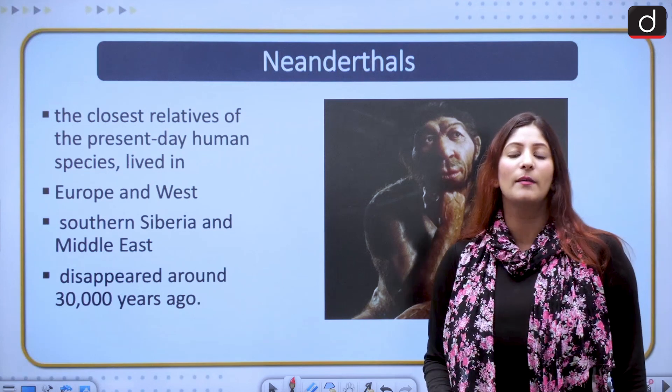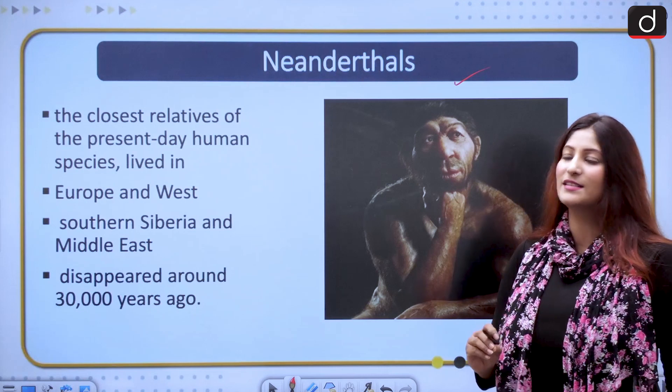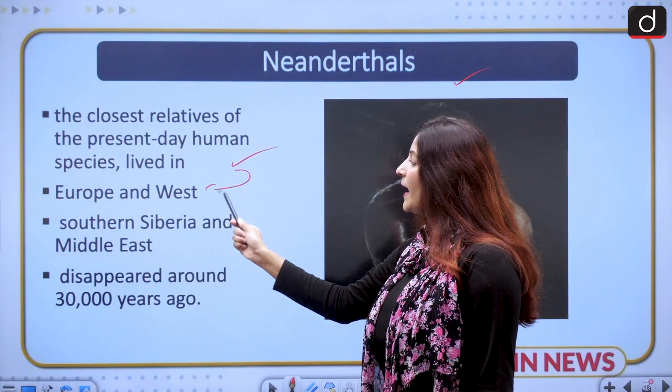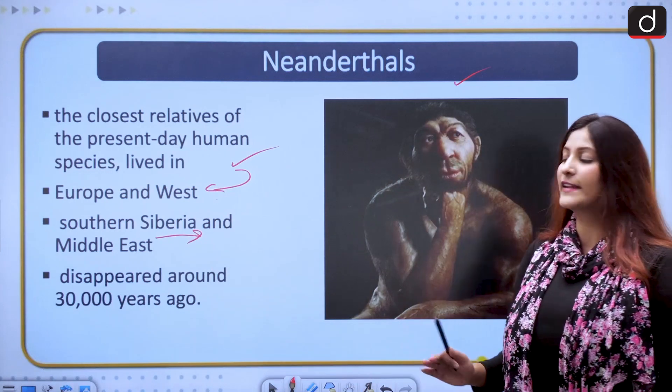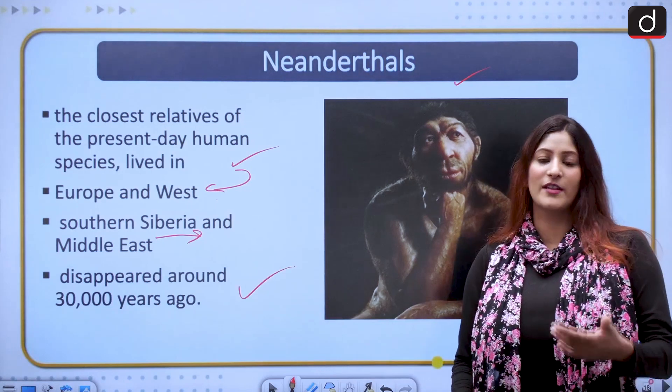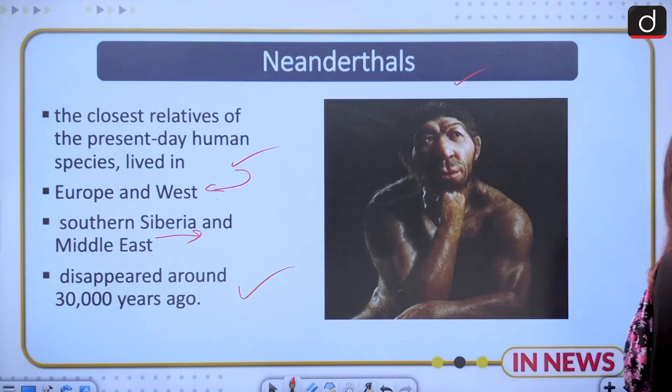Let's talk about Neanderthal. Neanderthal is basically the closest relative of the present-day human species. They lived in Europe and West Asia, Southern Siberia and Middle East were their expanse and they disappeared around 30,000 years ago. Just imagine getting a fossil so old and then understanding its DNA.